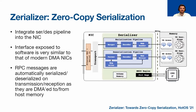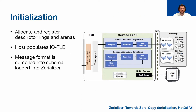This leads us to our proposed design of the Serializer. On a high level, we integrate a serialization-deserialization pipeline straight into the NIC. The interface it exposes to applications is very similar to that of modern DMA NICs. From the application's point of view, RPC messages are essentially automatically serialized and deserialized on transmission and reception as they're DMA'd from host memory — it simply seems that it's sending and receiving native data. To achieve this, there are initialization steps: the application allocates transmit and receive descriptor rings and arenas and registers them with the serializer. The host also populates the IOMMU/TLB with virtual-to-physical address translations. Finally, a message schema compiled from a domain-specific language such as protobuf is loaded into the serializer module.